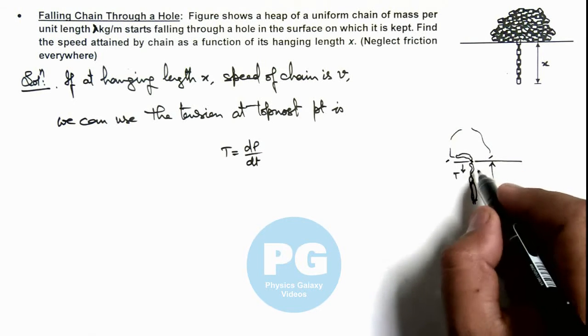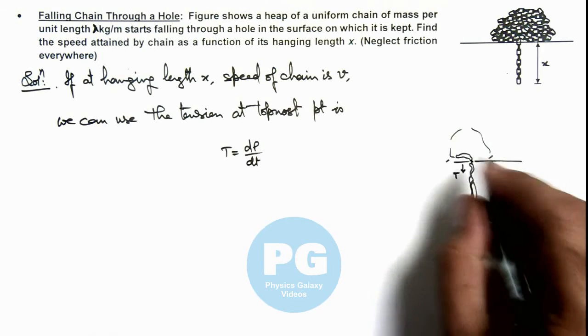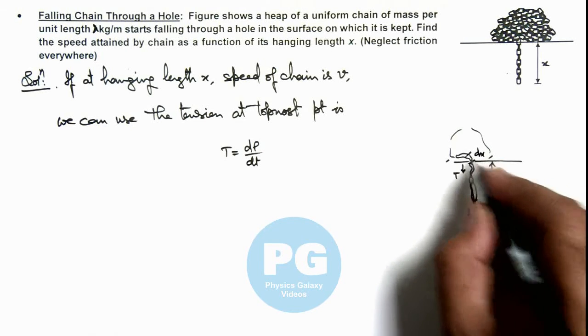The same tension will be acting on the lower chain in the upward direction. If it's coming down at speed v, in time dt a length dx of chain will come down.